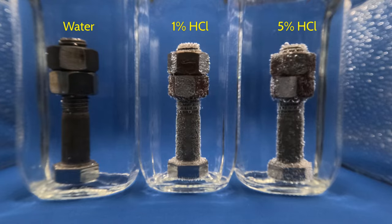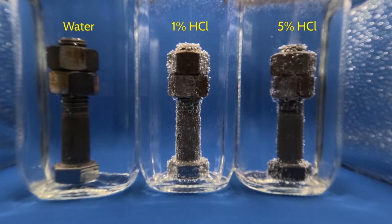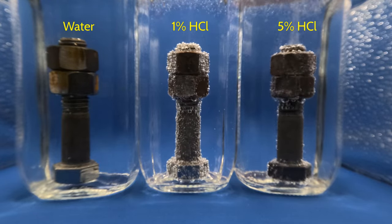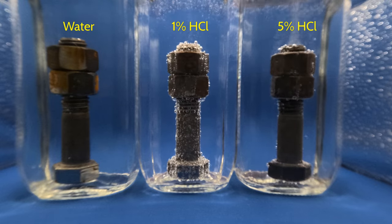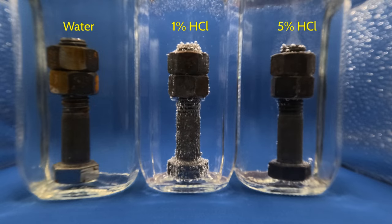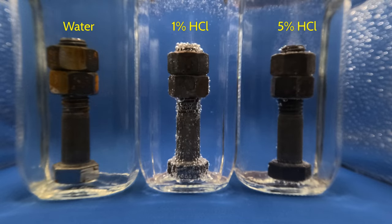And here we go. This video is accelerated by about 5,000 times. What you'll probably notice first is the amount of bubbles that are being formed. The hydrochloric acid attacking the steel generates and evolves hydrogen gas.